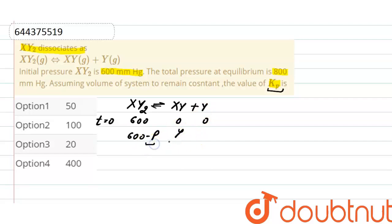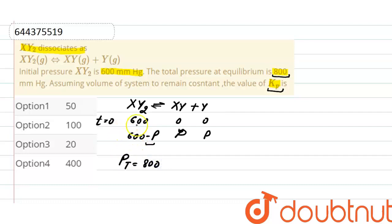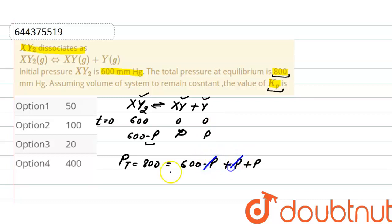The pressure of XY is p and the pressure of Y is also p. At equilibrium, the total pressure is 800. That means the total pressure at equilibrium is the sum of the pressures of XY₂, XY, and Y. So this will be (600 − p) + p + p = 800, giving a value of p = 200 mmHg.